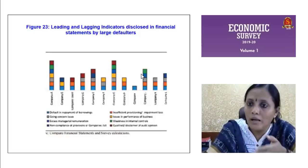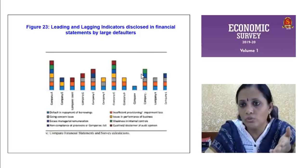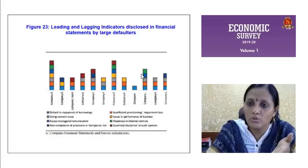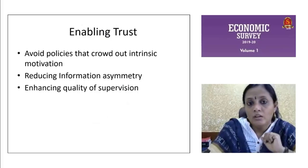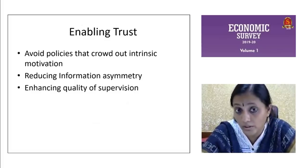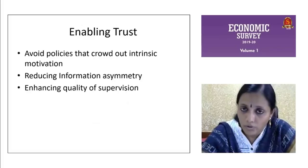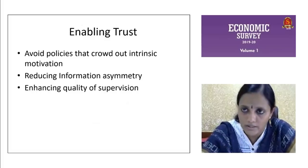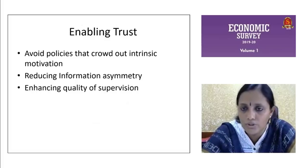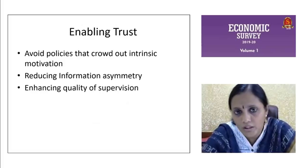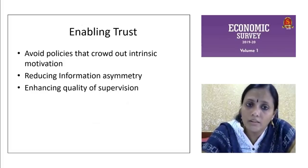You have heard about the twin balance sheet syndrome — when corporates fail with these problems, it results in problems for the banking system too. Their balance sheets are also affected. Now that we have identified these people are not performing well or getting into malpractices, we are going to say what is the role of the government in enabling trust. How do we bring them back to efficiency? The survey mentions two or three things. The first is: avoid policies that crowd out intrinsic motivation.